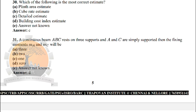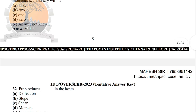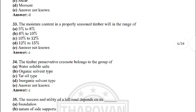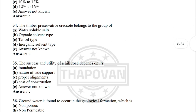Next: propped reduced beam — the correct answer is option D: moment. Next: the moisture content in properly seasoned timber will be in the range of — the correct answer is option C: 10% to 12%.